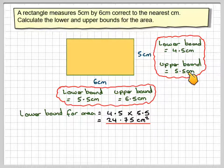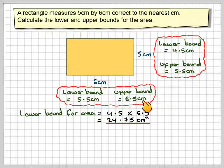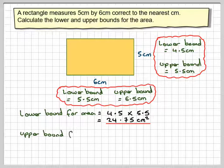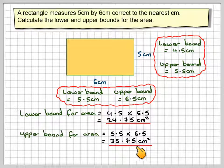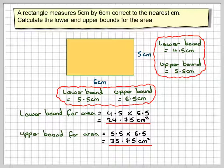And the upper bound, we do 5.5 times 6.5, taking the upper bound for both. So we're going to get 5.5 times 6.5, which is going to be 35.75cm squared.